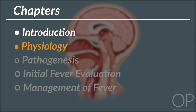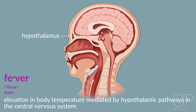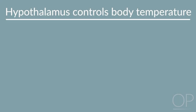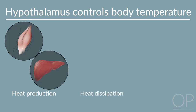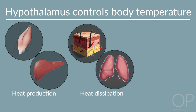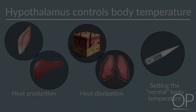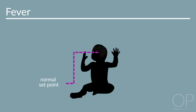Fever is an elevation in body temperature mediated by hypothalamic pathways in the central nervous system. The hypothalamic thermoregulatory center controls body temperature through three mechanisms: controlling heat production mainly in the muscles and liver; controlling heat dissipation from the skin and lungs; and setting the normal body temperature. Fever is a physiologic process where the hypothalamus sets a higher body temperature set point in response to endogenous signaling, and the body then rebalances heat production and dissipation to elevate the body temperature to the new set point.